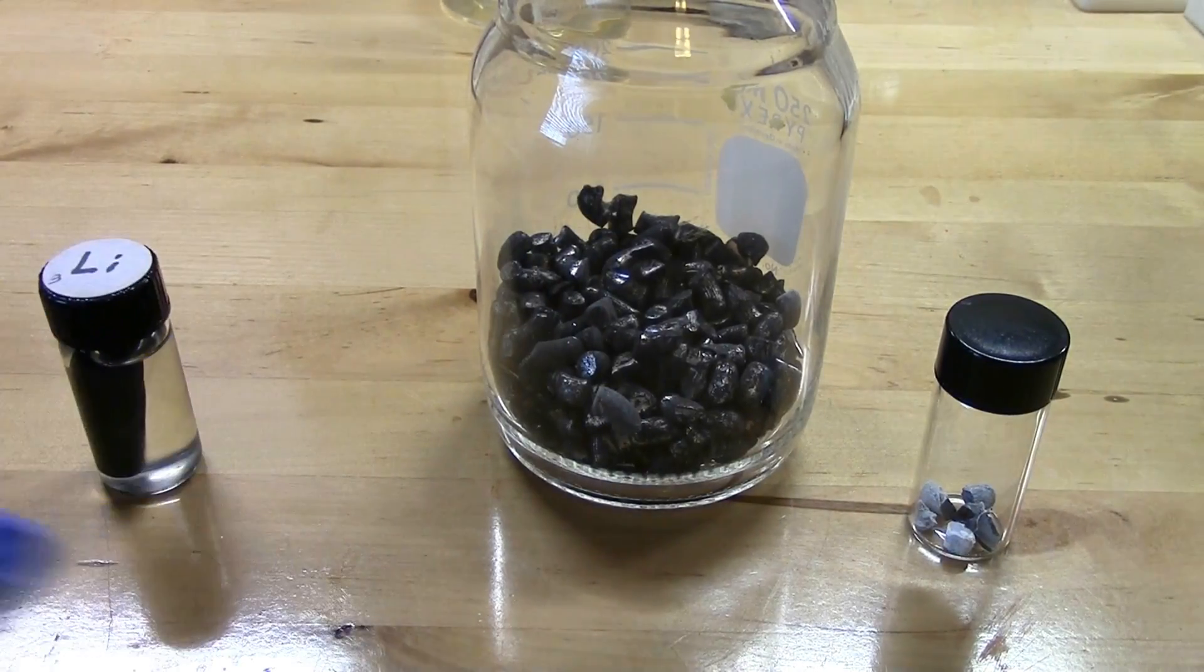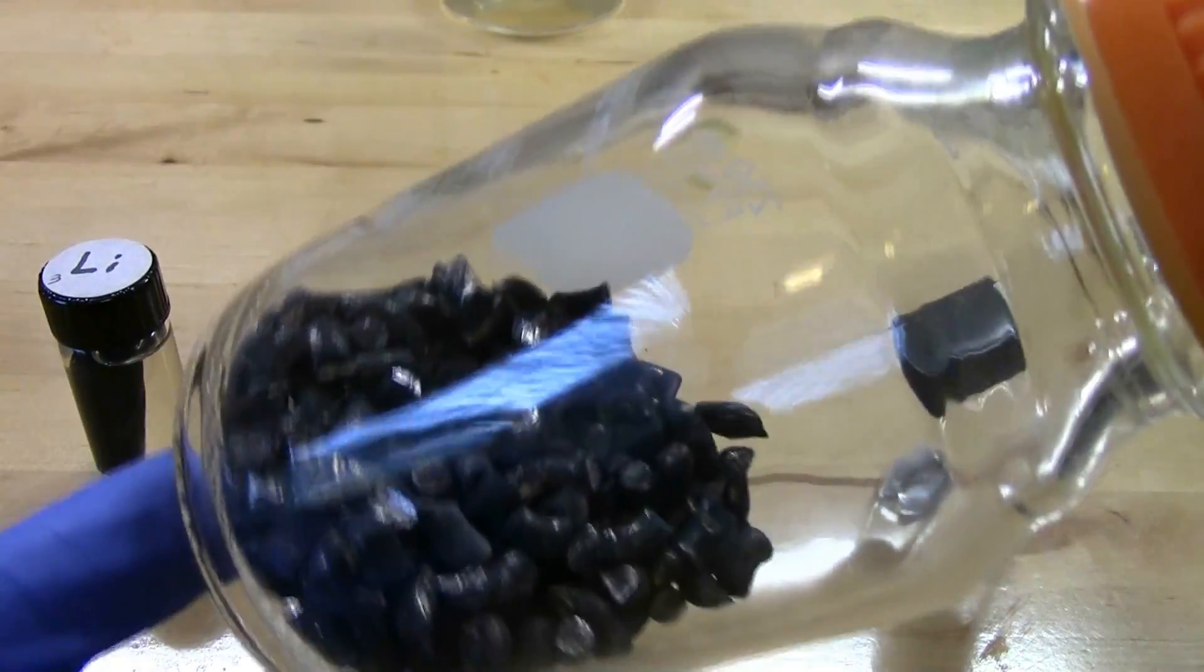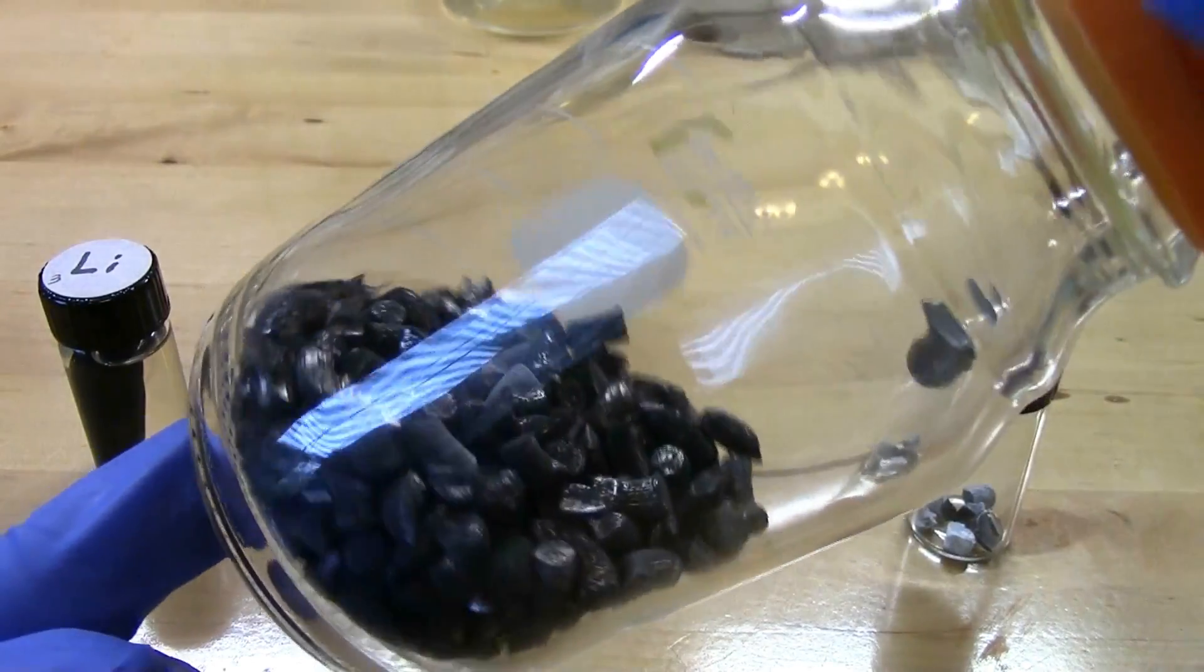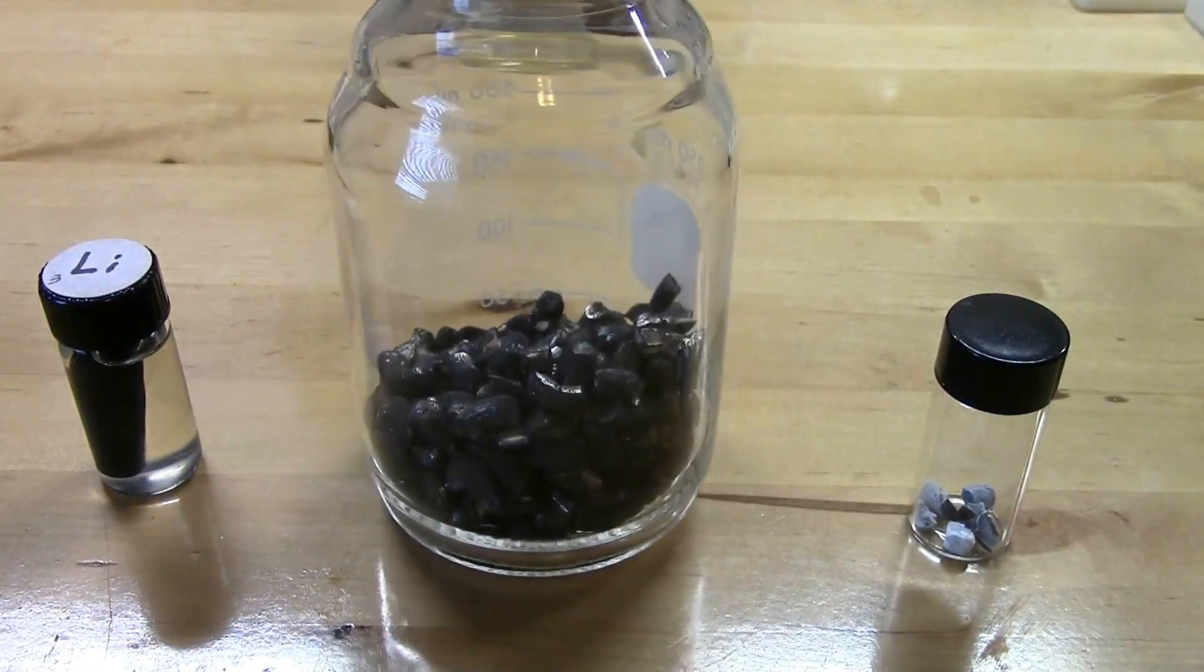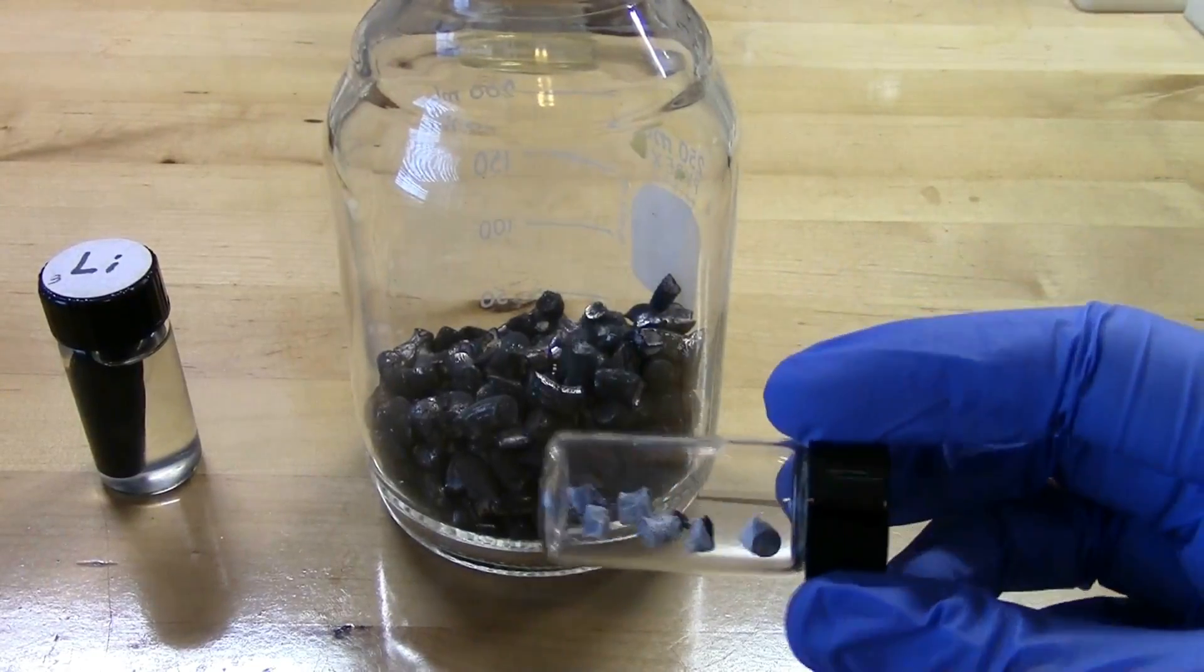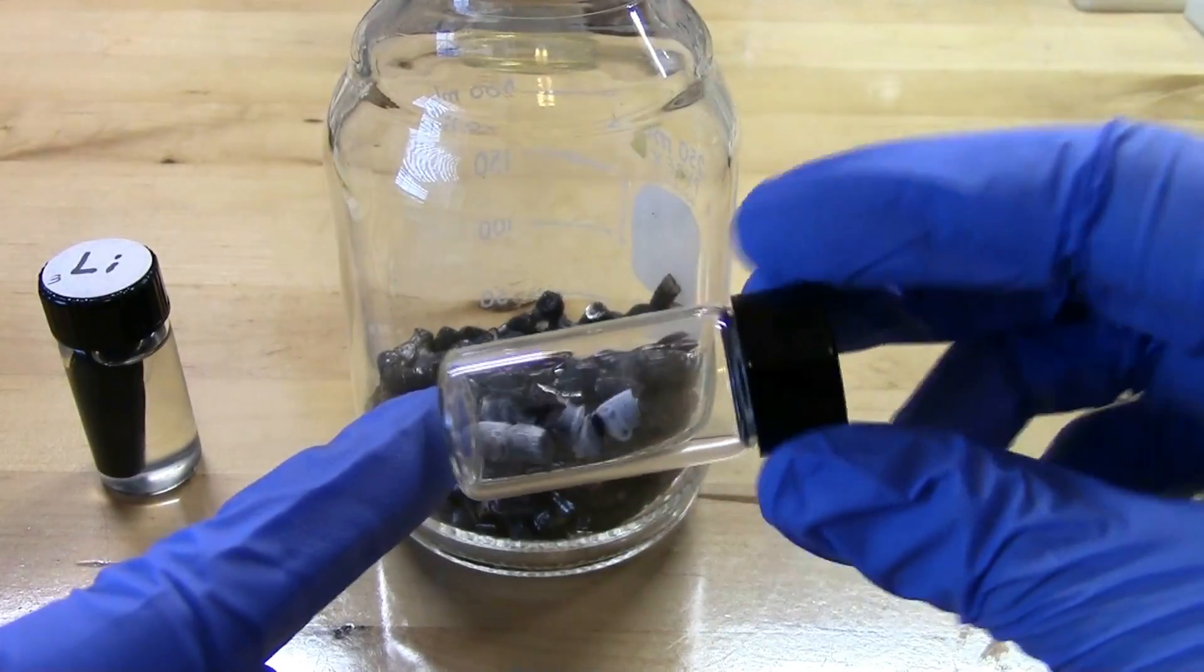This jar I have here is under argon. You can see some of these pieces are reasonably shiny but for the most part are pretty black. Then I have a third vial here of lithium that was left out a little bit too long and this is all crusted with white stuff.